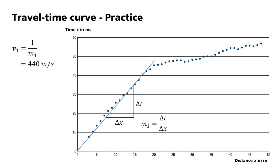Here, v1 is 440 m per second. The propagation velocity of the half space is equal to the reciprocal slope of the travel time branch of the refracted wave: v2 equals 1 divided by m2, equals 2340 m per second. Ultimately, the layer depth can then be determined with this data. For this, we need the intercept time t1, which gives the method its name.